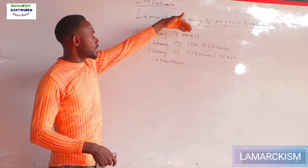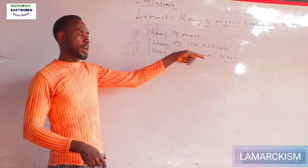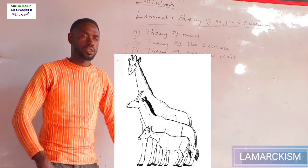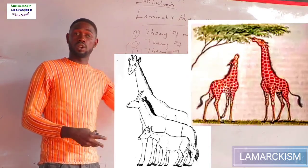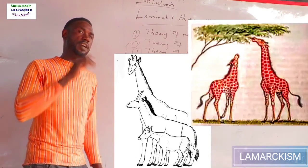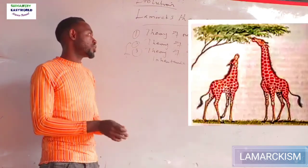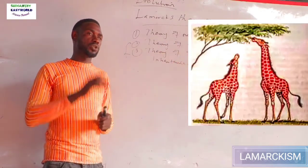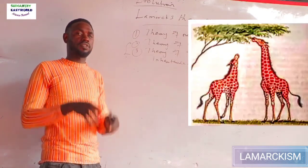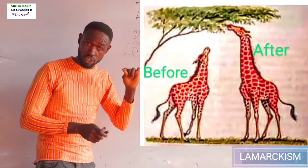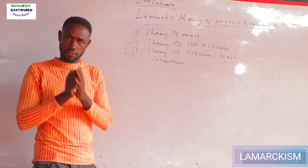The theory of use and disuse is illustrated by the giraffe. According to Lamarck, the ancient giraffe once had a short neck and short legs. But there was a need for them to stretch their neck to get foliage from trees, so they started stretching their neck — that stretch is called 'use' — and eventually, due to constantly stretching, they acquired a long neck. So giraffes we see today have long necks because they constantly stretched, according to Lamarck. This explanation is quite doubtful, but just get the information for your exams.